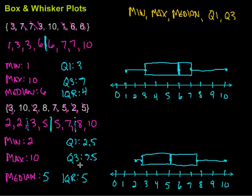The interquartile range tells us where the middle 50% of the data is and how long that range is. For box and whisker plots, we need five values: the minimum, maximum, median, and then the first and third quartiles, which are found by splitting the data in half and finding the median of each half. The interquartile range is the length of the box — Q3 minus Q1 — representing the middle 50% of the data. I hope this video was helpful. Keep working hard on your math, and I know you'll do great.